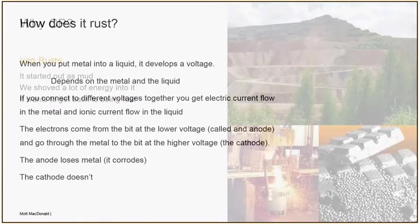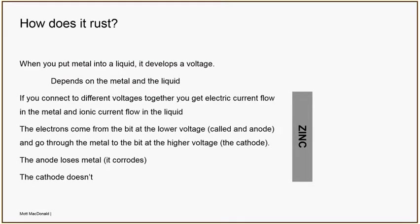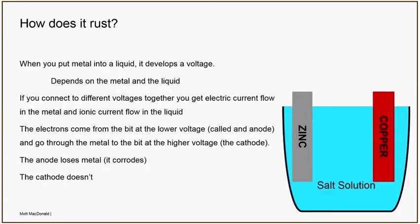How it gets there is the physics bit — electrochemistry. If you stick any metal into any liquid it'll develop a voltage. Here we've got zinc sat in salty water and copper sat in salty water. The voltage they develop depends on what they're made of and the liquid we stuck them in. Typically zinc will be about minus one volt, copper will be about plus 0.2 volts. Most voltages in corrosion are negative, so electrochemists don't have to move negative signs around, but the rest of us have to deal with minus numbers.